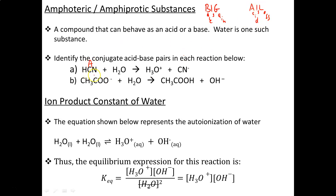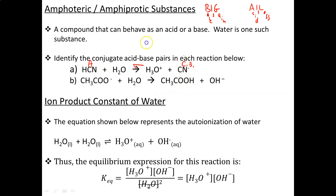Once HCN loses the H+, it is now considered to be the conjugate base — the exact opposite. While HCN is the acid, CN is the conjugate base, because if we go in the reverse direction, CN will gain an H and base is gain. So we call this an acid and conjugate base pair — they are conjugate acid-base pairs.